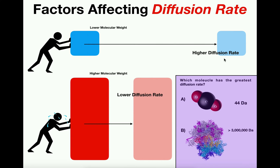Different molecules have different molecular weights. To illustrate: which molecule has the greatest diffusion rate — carbon dioxide with a molecular weight of 44 Daltons, or a ribosome with just over 3 million Daltons? The greatest diffusion rate belongs to the smallest particle, which is obviously carbon dioxide. The ribosome has a much lower diffusion rate because its molecular weight is so much larger.